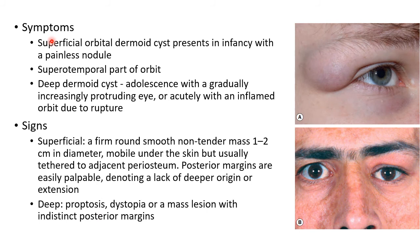Now let us discuss about the symptoms of dermoid cyst. Superficial orbital dermoid cyst presents in infancy with a painless nodule. It is usually present in the superotemporal part of the orbit, as you can see in this picture.